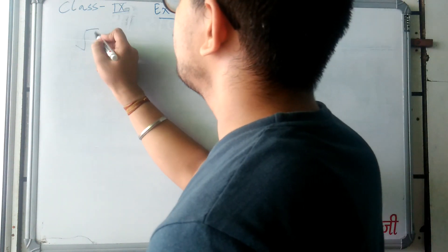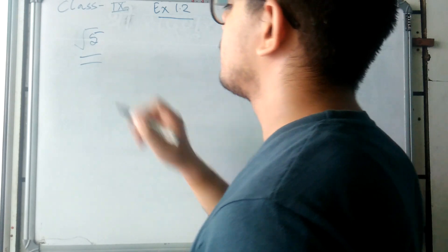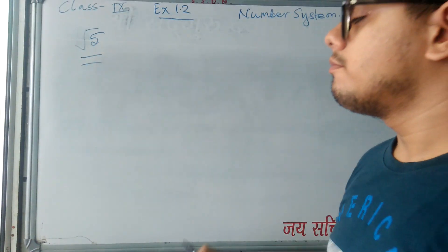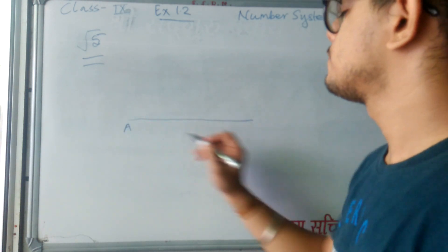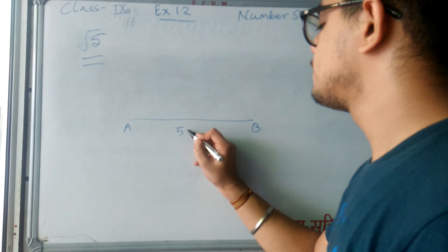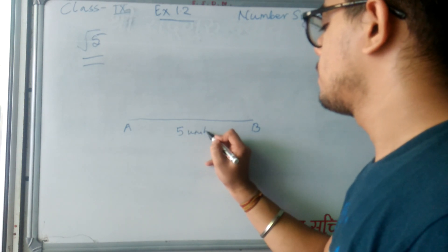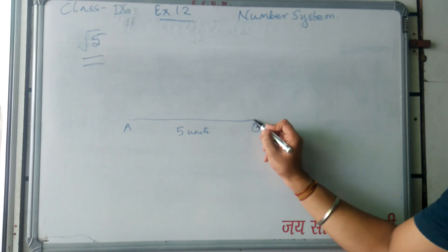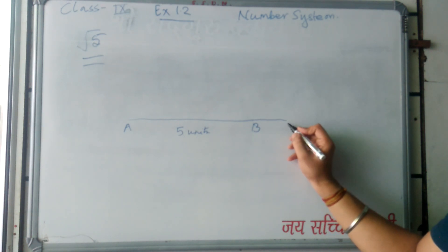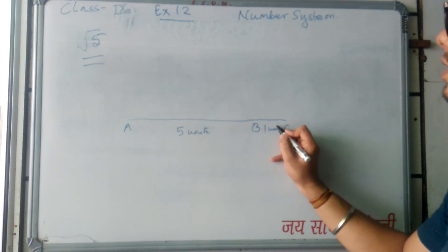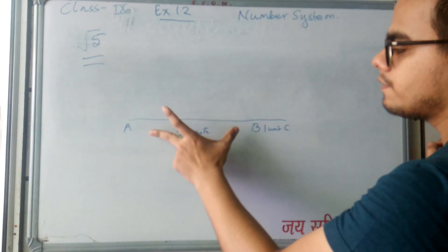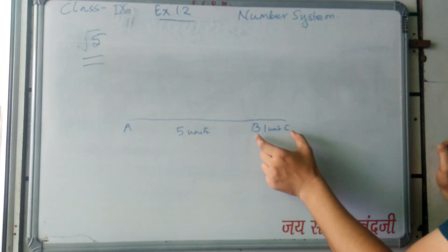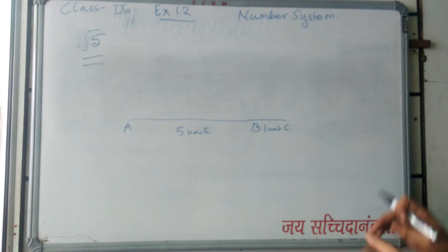We have to plot root 5 on a number line. For plotting root 5, we draw a line AB of 5 units, then extend it by one more unit to C. So we draw AB of 5 units and then increase or extend it by 1 unit to point C.